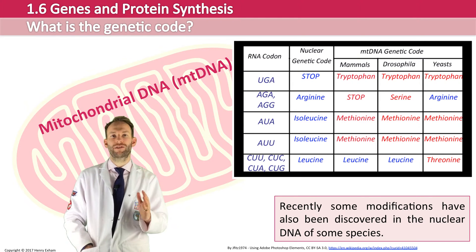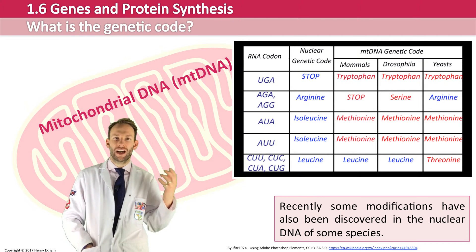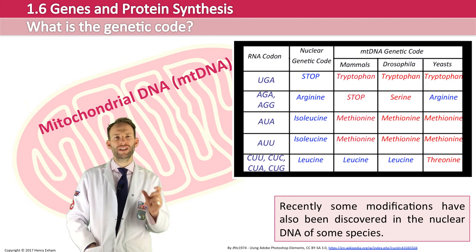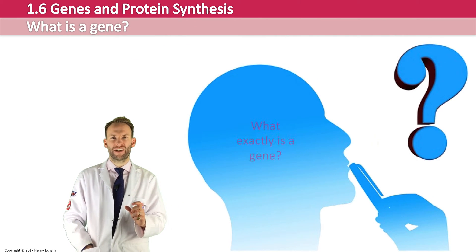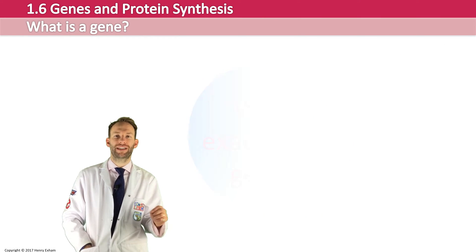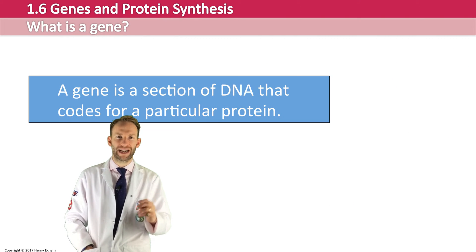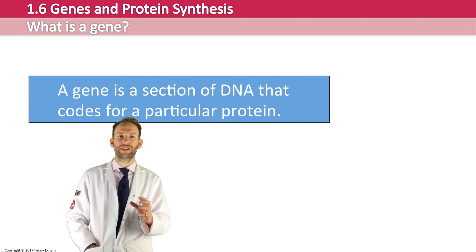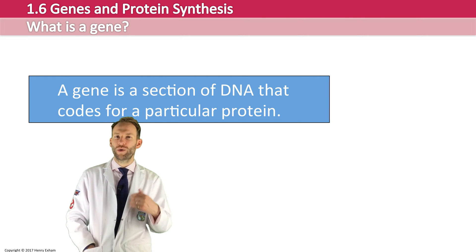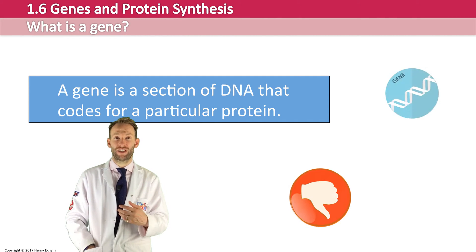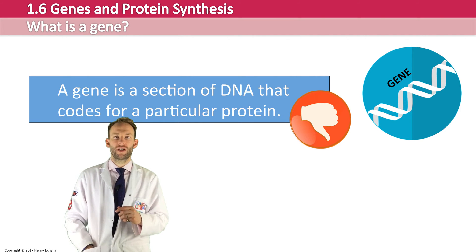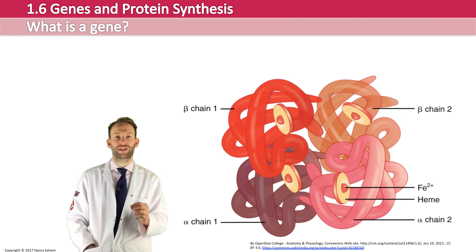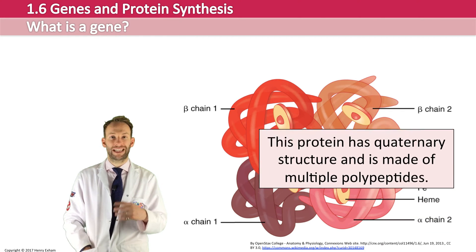So we know what the genetic code is — the sequence of bases read in threes that can code for a protein. But what exactly is a gene? You probably know this definition: a gene is a section of DNA that codes for a particular protein. It's not a bad definition, but now with the amount of biology we know we can go into more detail. For example, what about proteins with a quaternary structure, like hemoglobin?